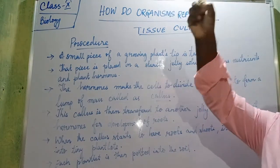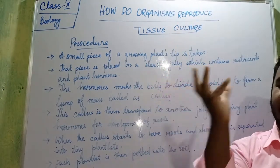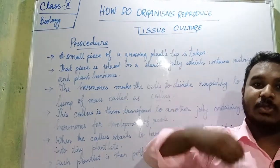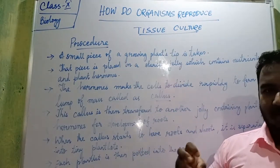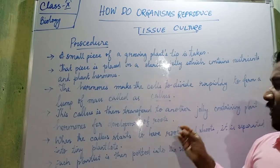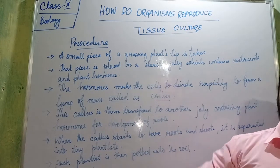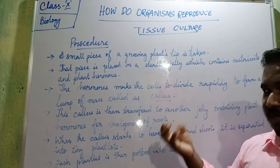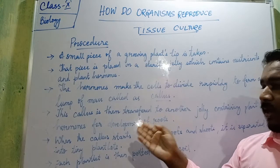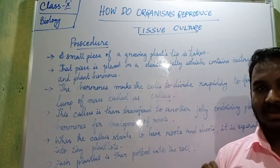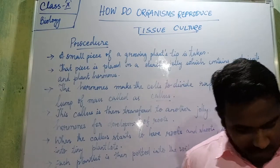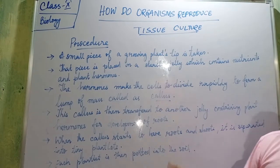To recap: first, a small tip is cut and taken into a petri dish containing sterile jelly with nutrients and plant hormones. Cell division takes place and when it forms a lump of cells, it is called callus. That callus is then transferred into another petri dish for root development. When small roots and shoots come out, they are separated into tiny plantlets or seedlings. Each seedling is potted into soil, where it grows into a new plant. That is the simple explanation of tissue culture.